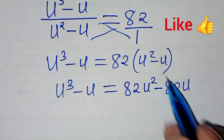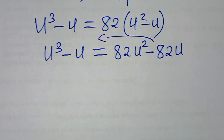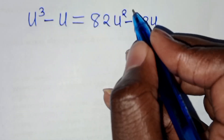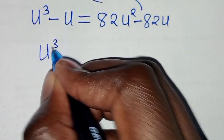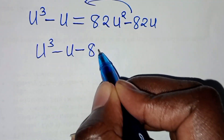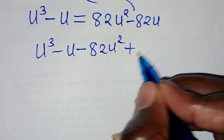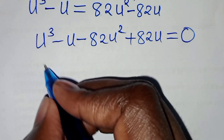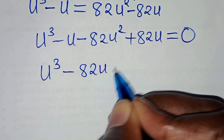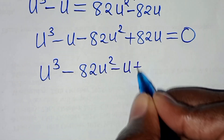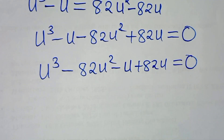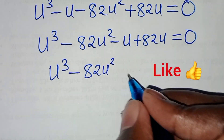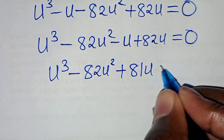Taking all terms to the left-hand side: u to the power of 3 minus u, minus 82u squared, plus 82u equals 0. Combining like terms, negative u plus 82u gives plus 81u, so we have u cubed minus 82u squared plus 81u equals 0.